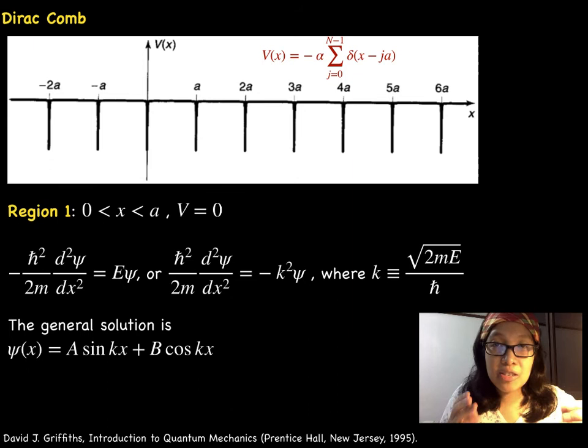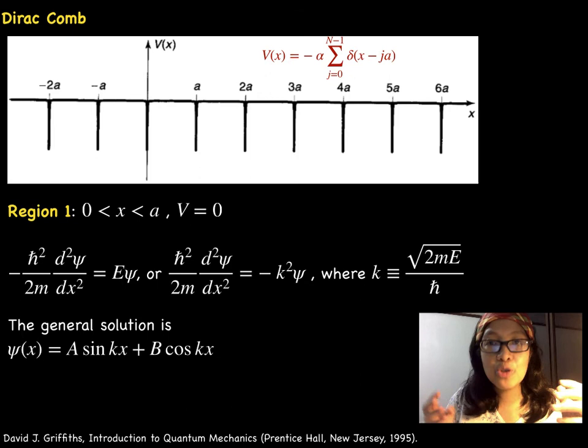In the region 0 < x < a, the potential is 0. The Schrödinger's equation is given. We let small k be equal to the square root of 2mE/ℏ². The general solution is written in terms of sine, cosine, and the small letter k.